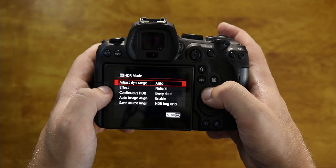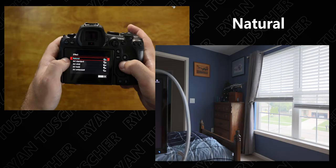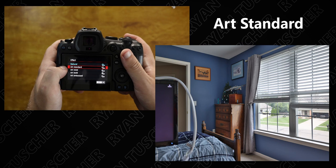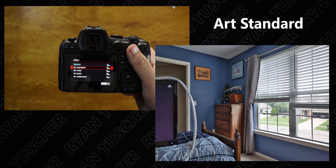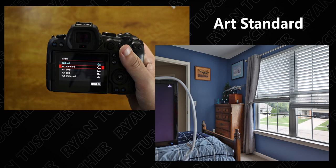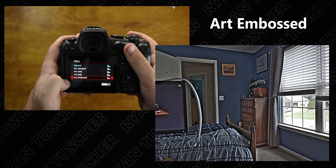Then there's the Effect tab. Natural gives you a grayer photo that you can color grade yourself. Art Standard color grades it for you based on what it thinks it should look like — though it can give weird shadows or overly gray results sometimes. Art Vivid gives it a more cartoonish style, and then there's Art Bold and Art Embossed — I don't use these.